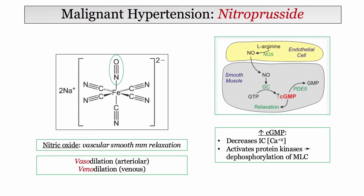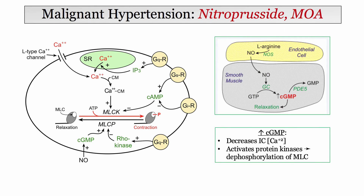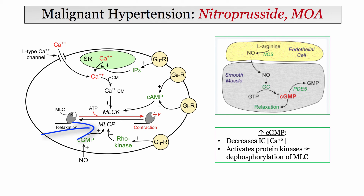Nitric oxide raises intracellular cyclic GMP levels, and from there accomplishes two downstream effects: it decreases intracellular calcium and activates protein kinases that lead to dephosphorylation of myosin light chain. If nitric oxide decreases intracellular calcium, it will be less available for binding to calmodulin, and that complex binds to myosin light chain kinase — no kinase, no contraction. Similarly, by stimulating myosin light chain phosphatase, smooth muscle relaxation ensues.